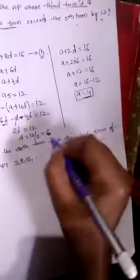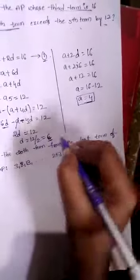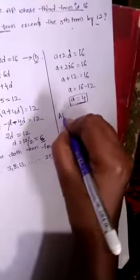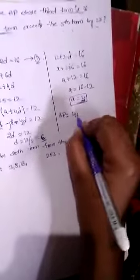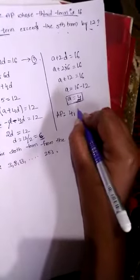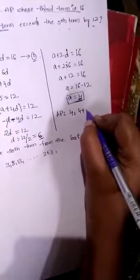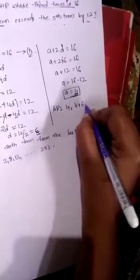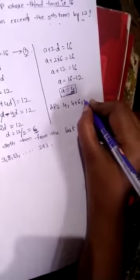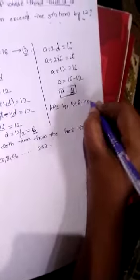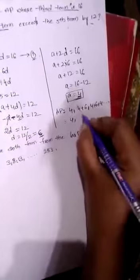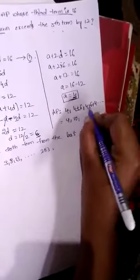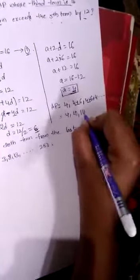So we know the A value and the common difference. Now write the AP. The AP equals: 1st term is 4, 2nd term is 1st term plus common difference, so 4 plus 6 equals 10. 3rd term is 10 plus 6 equals 16. 4th term is 16 plus 6 equals 22, and so on.